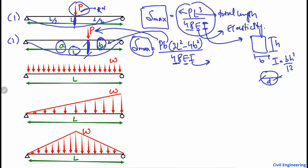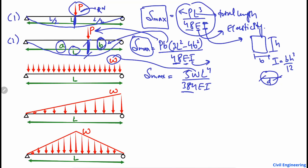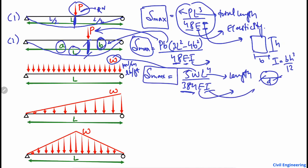The next case is a simply supported beam with a uniformly distributed load. This uses the well-known equation: maximum deflection equals 5WL⁴ divided by 384EI. Here 5/384 is a constant, W is the uniformly distributed load in kilonewtons per meter or pounds per foot, L is the total beam length, E is the modulus of elasticity, and I is the moment of inertia. The maximum deflection occurs at mid-span.